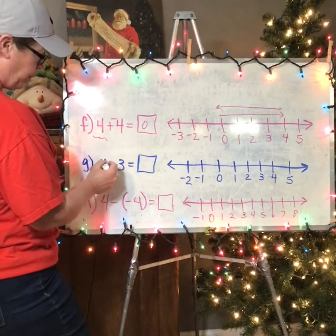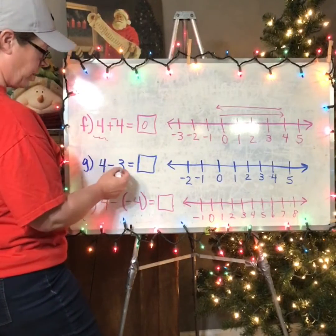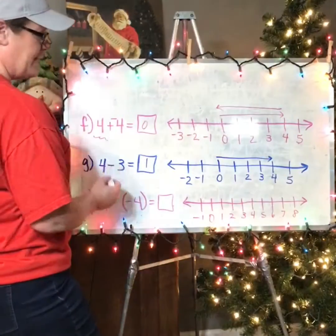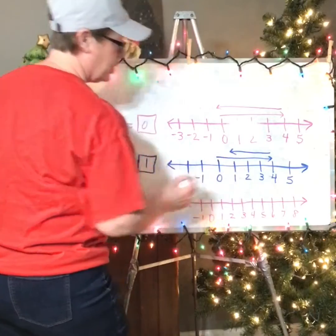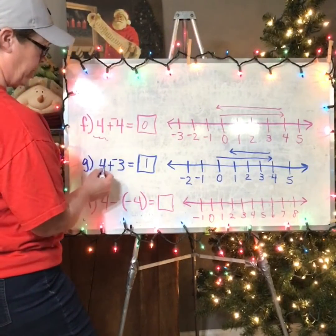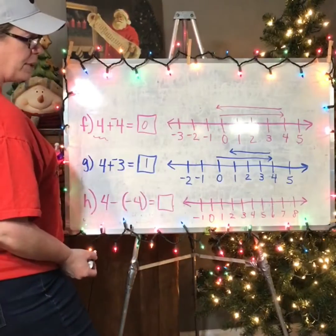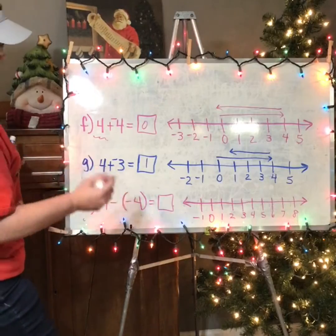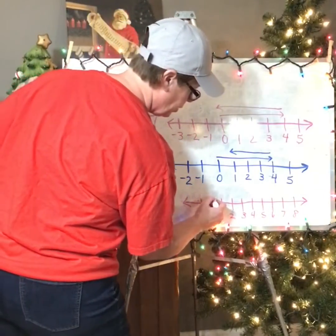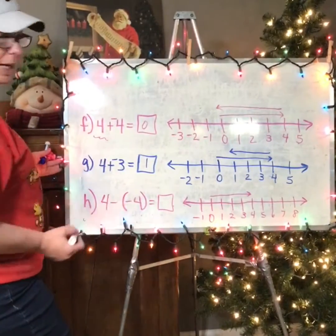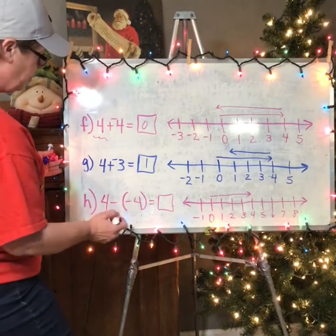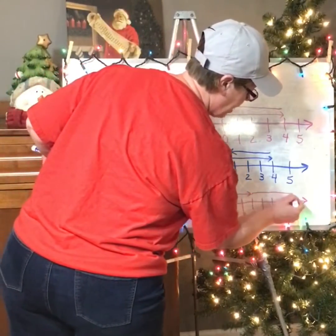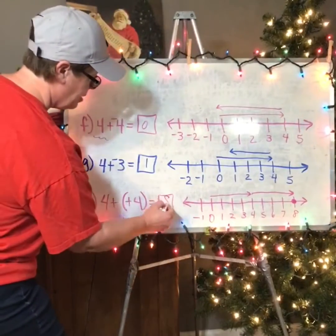Then we have 4 minus 3, which we should know is one. Start at positive four, take away three — drags us back three — or add the second number opposite: go to four, add three negatives, drop left three spots, still end up at one. The very last one — this is the hardest one to see without our pattern. We start at positive four, take away four negatives, which doesn't always make sense. So we switch to add, second number goes opposite: adding four positives takes me to the right four more spots, and I end up at eight. So my answer is eight.